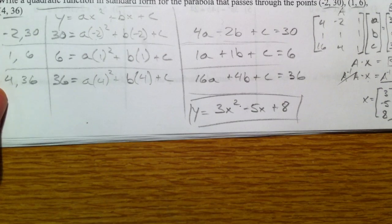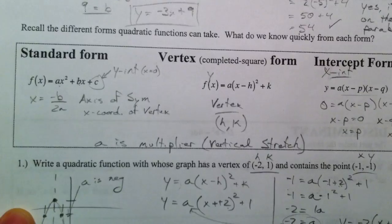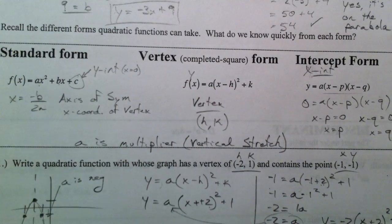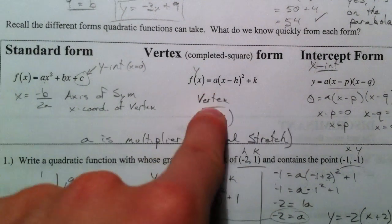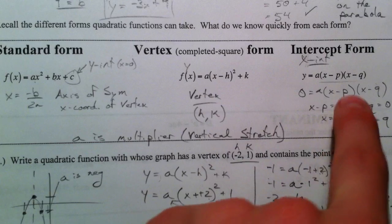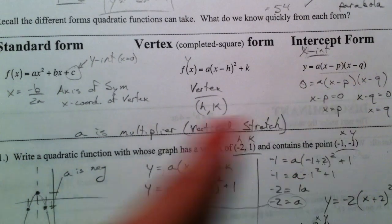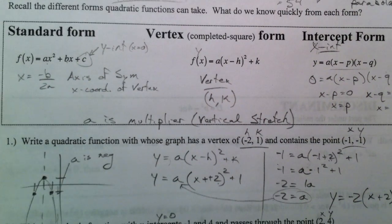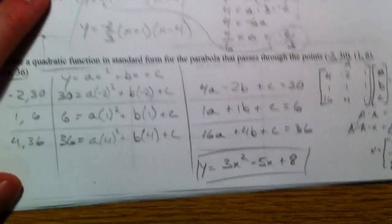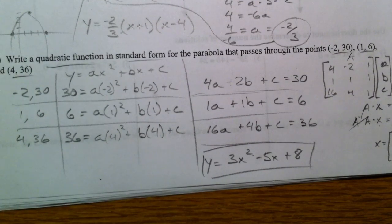So that's how you write quadratic functions, taking advantage of the different forms depending on what you're given. If you're given the vertex, if you're given the intercepts, y-intercepts, or if you're only given three points, you're going to have to go to standard form and solve the system with the A, B, C.